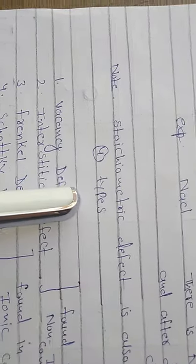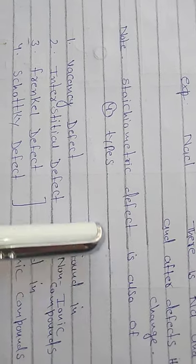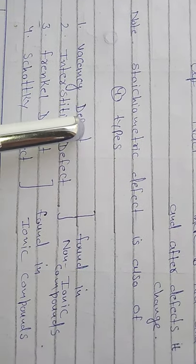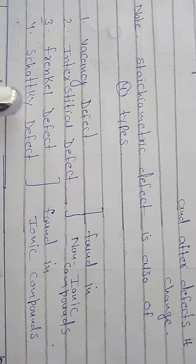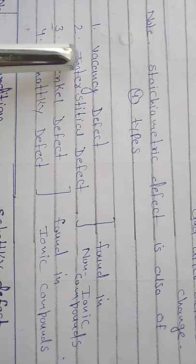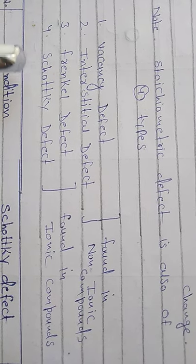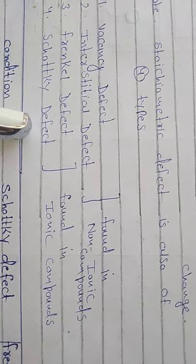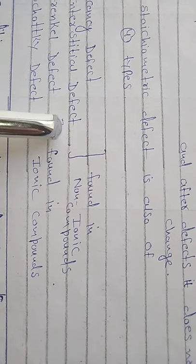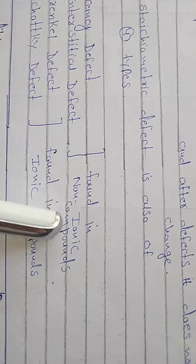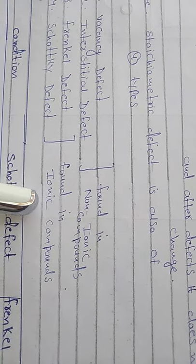The stoichiometric point defect also has four sub-types. The first is vacancy defect, the second is interstitial defect, the third is Frenkel defect, and the fourth is Schottky defect. Vacancy and interstitial defects are generally found in non-ionic compounds, while Frenkel and Schottky defects are found in ionic compounds.